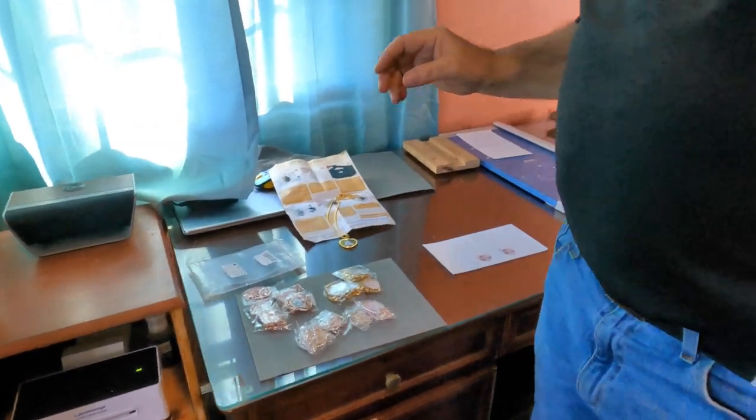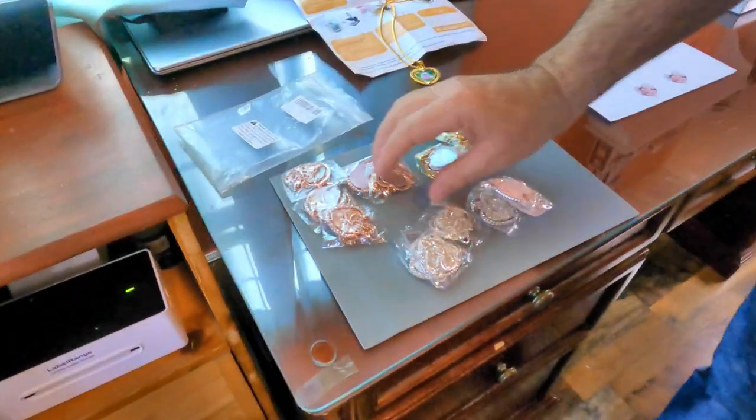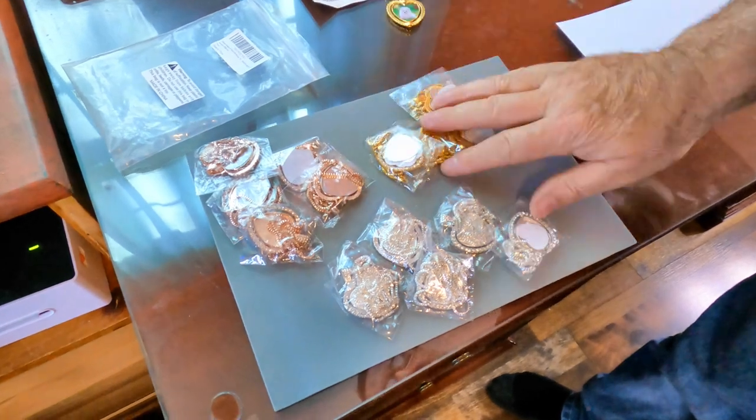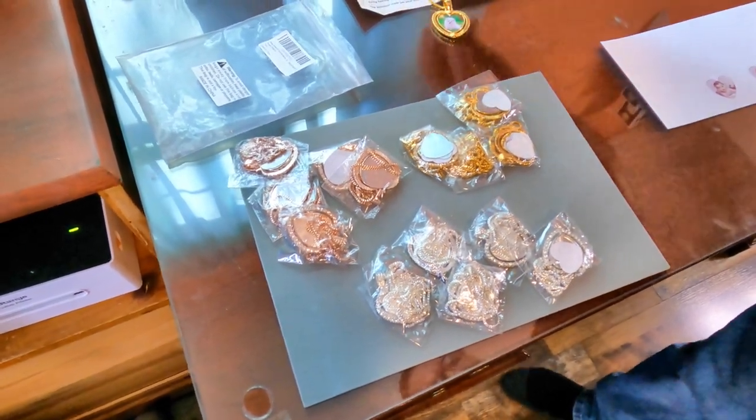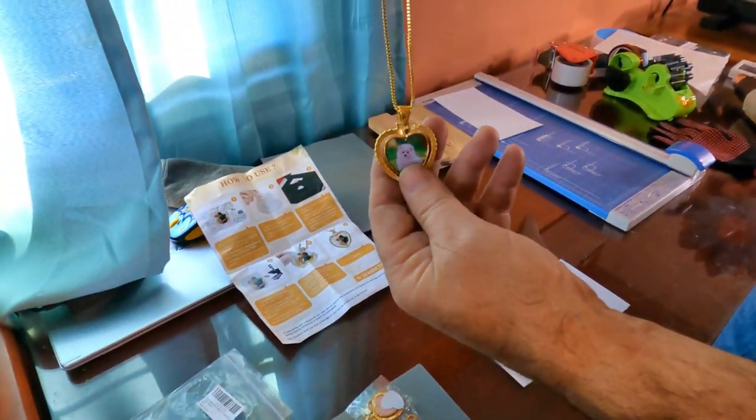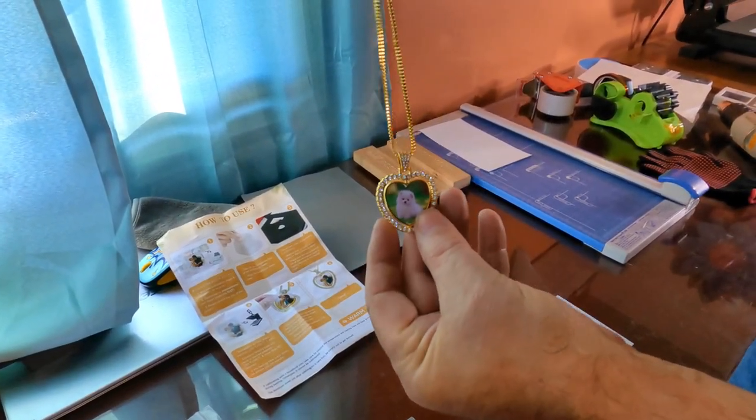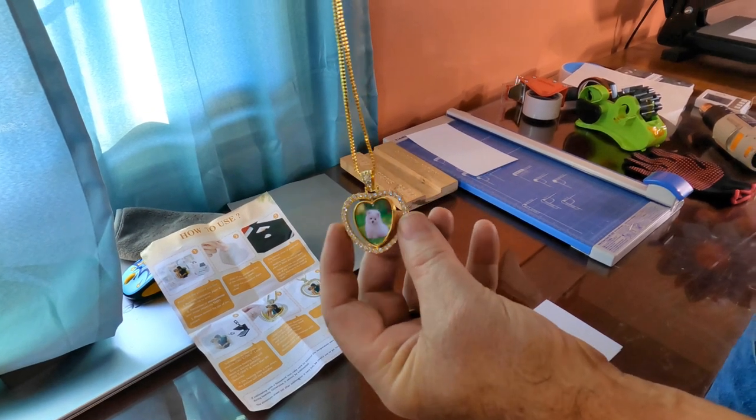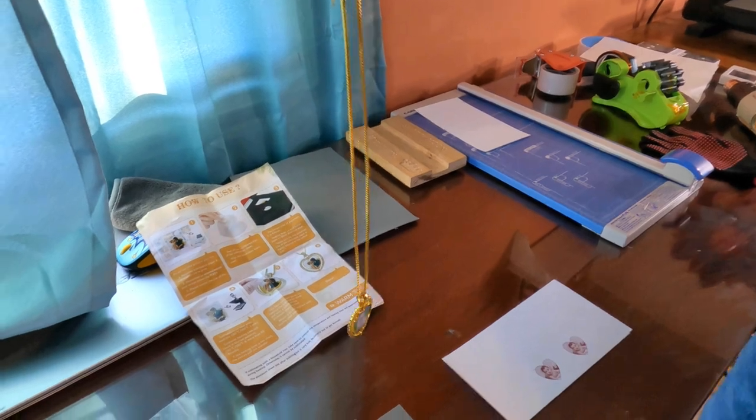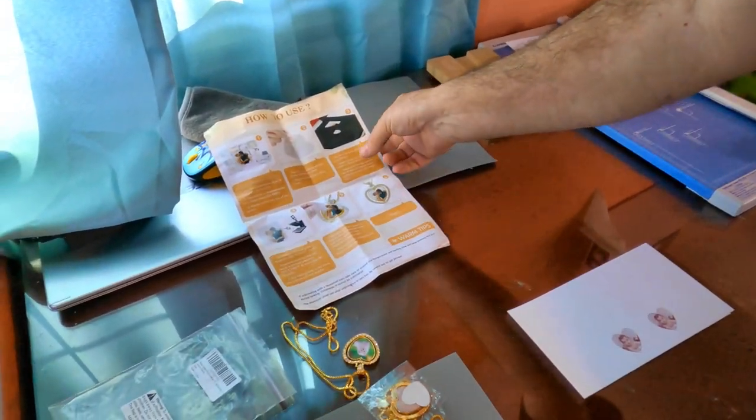When you get these you'll get five of each color: five silver, five gold, and five rose gold. This is what they look like after they've been sublimated. There's this side and this side, and the little pendant spins around in the middle.